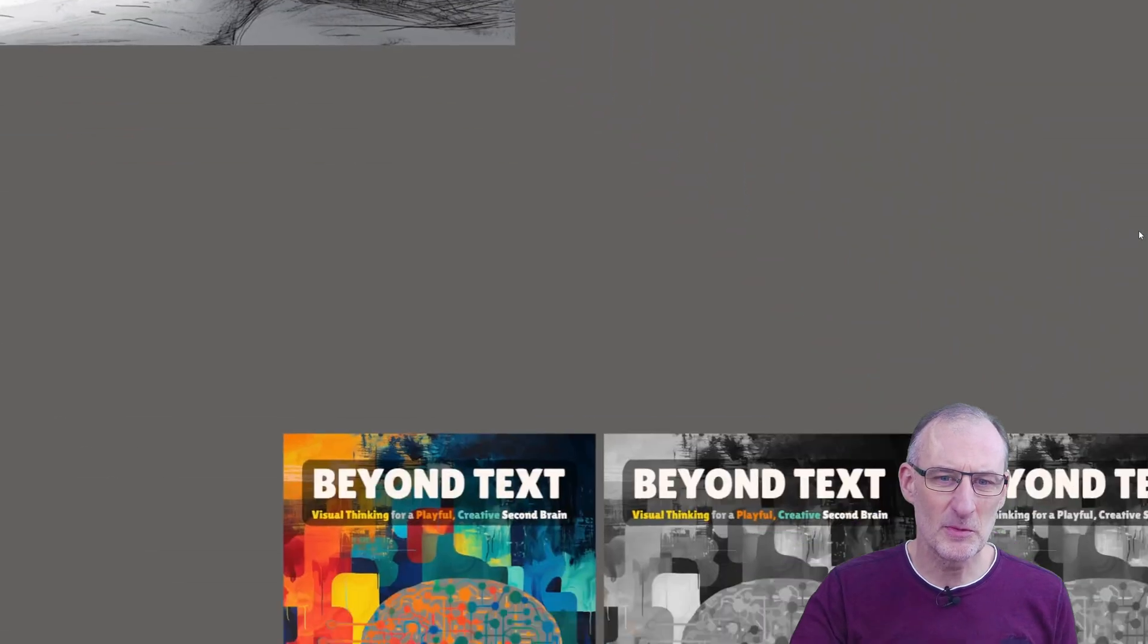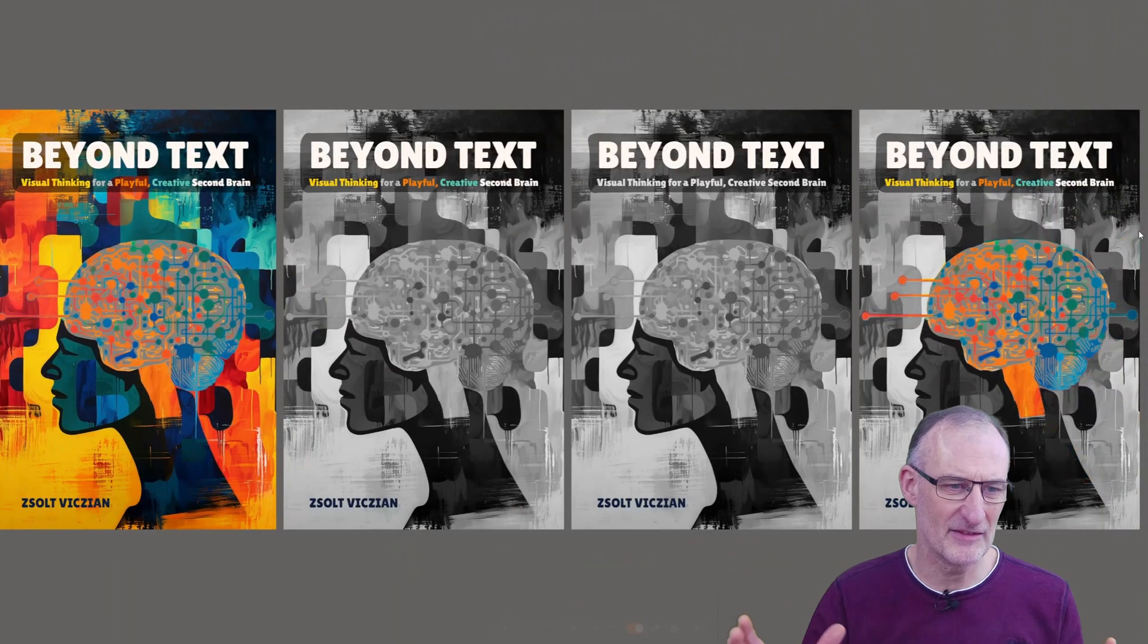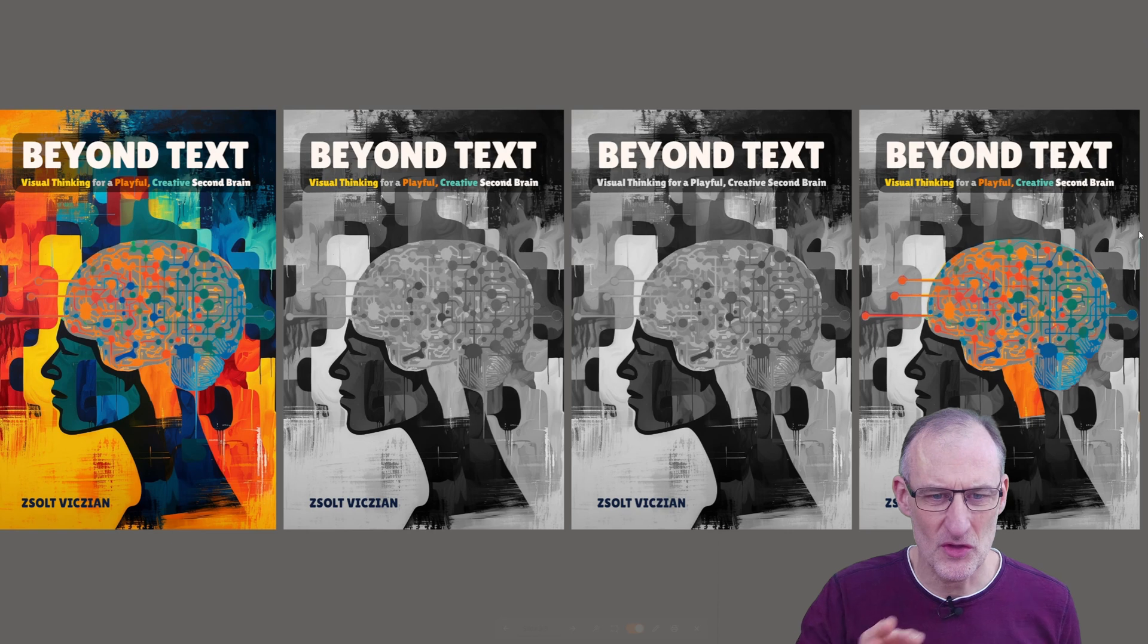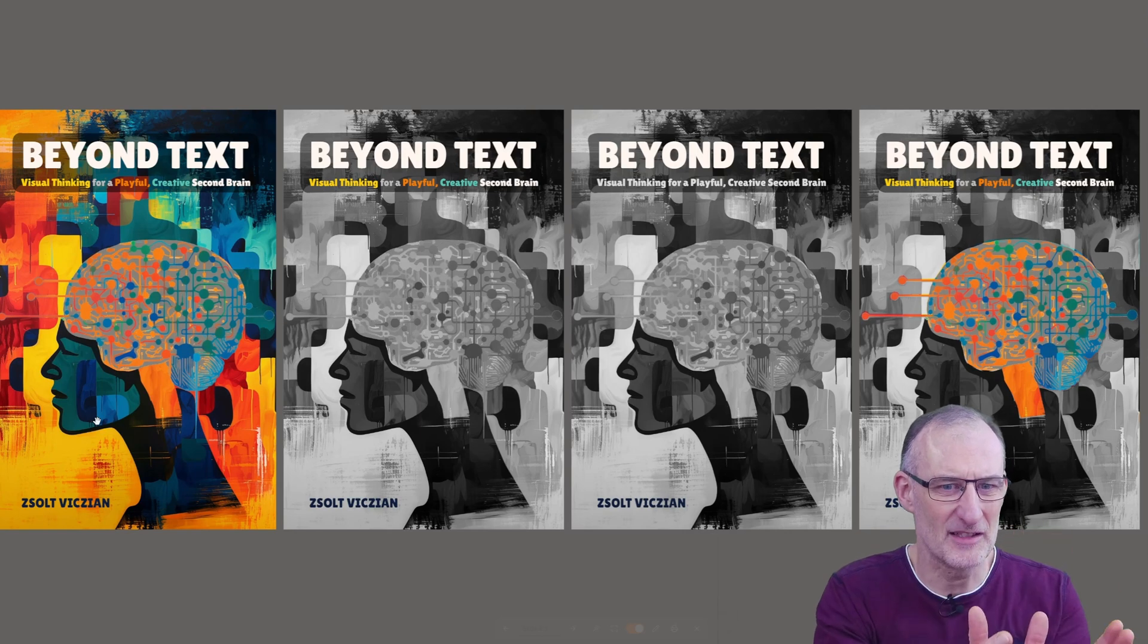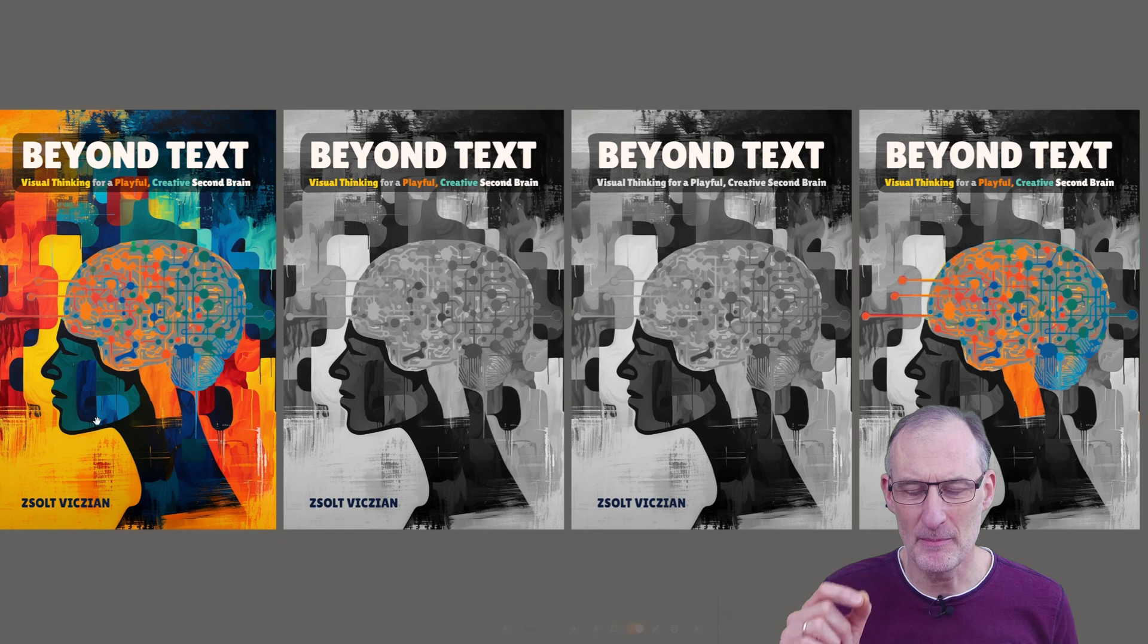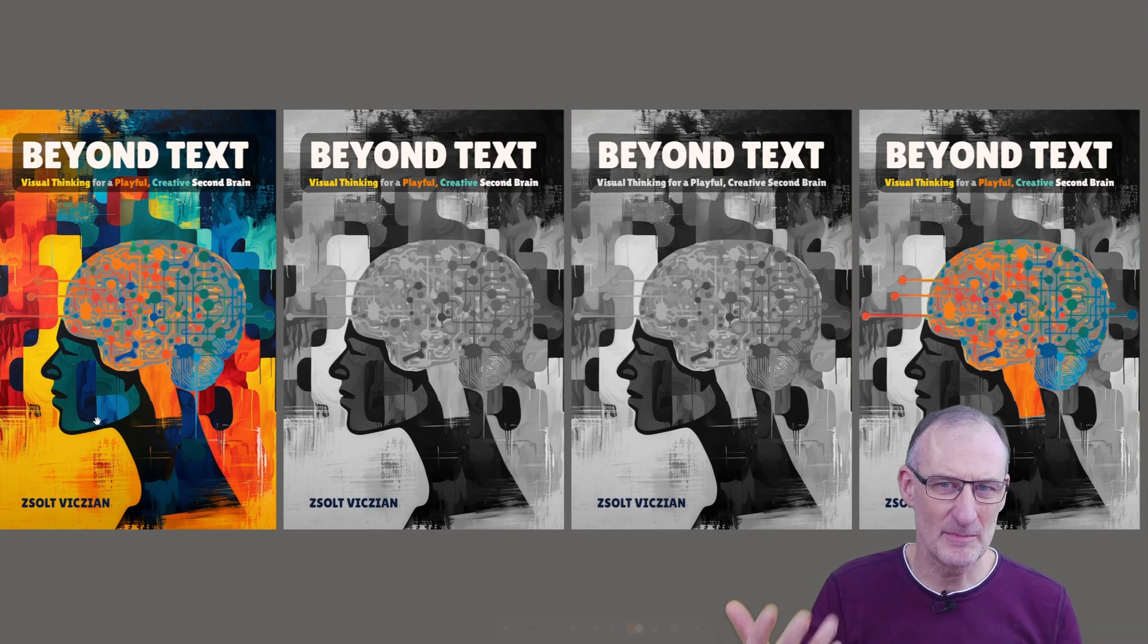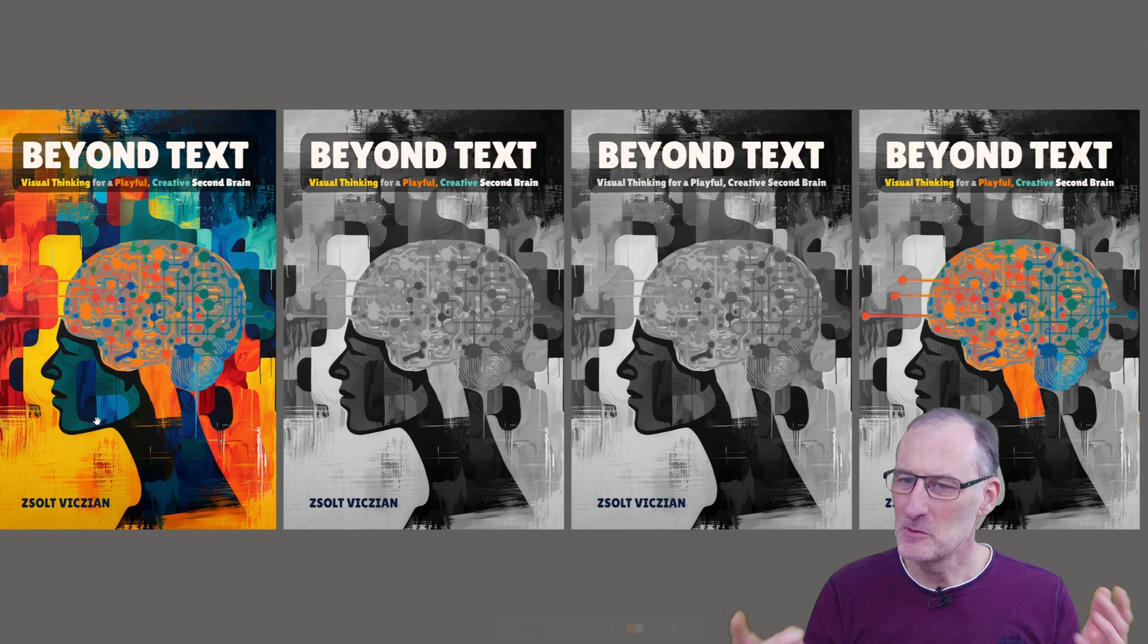But before we go there, I just wanted to show you that I've been playing with some cover art. Some people commented that there's too much going on on these. I like the colors, especially here. I like that it's vibrant, that it has lots of color. I also like the title Visual Thinking for a Playful Creative Second Brain. For me, this subtitle is something that speaks to me and really speaks to the heart of the book.